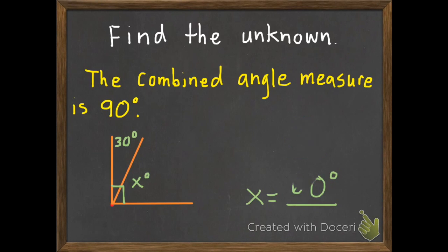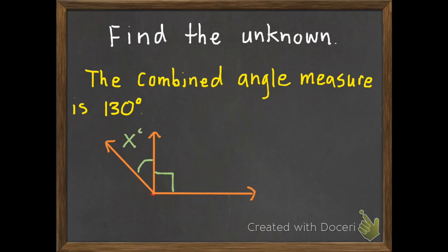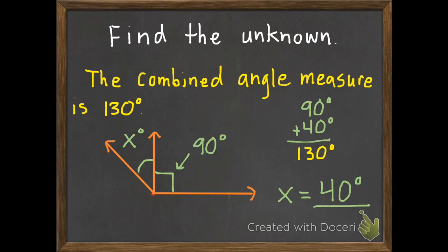Okay, do one more with me. This time the combined angle measure is 130 degrees. And we have two angles. x is one, and the other angle, it doesn't actually say. But if you look at it, you should be able to figure it out. Okay, so knowing this mark means 90 degrees, that can help us out. So we have 90 degrees plus, should be a plus sign right there, plus x degrees equals 130. So what would fill that up would be 40. So 40 plus 90 equals 130 degrees.